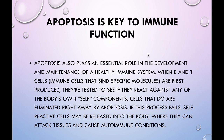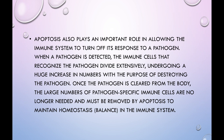Regarding apoptosis and immunity: B and T lymphocytes have ligands on their membranes that attach to viruses or infected cells in the body, binding and removing them. Apoptosis also plays an important role in allowing the immune system to turn off its response to pathogens. After a pathogen has been cleared, pathogen-specific immune cells are removed via apoptosis.